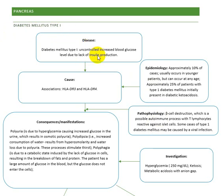The endocrine pathology of the pancreas is based on the alpha and the beta cells of the pancreas. The alpha cells of the pancreas secrete glucagon, while the beta cells secrete insulin.